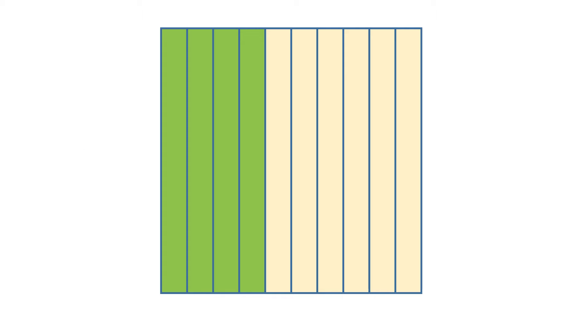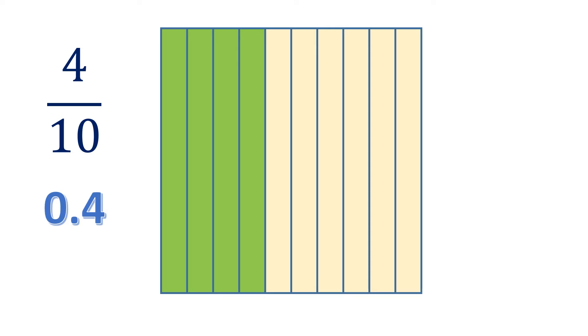Another one — we have four shaded parts out of ten. In fraction, it's four-tenths. Also, in decimal, it's also four-tenths, but in this form: 0.4.